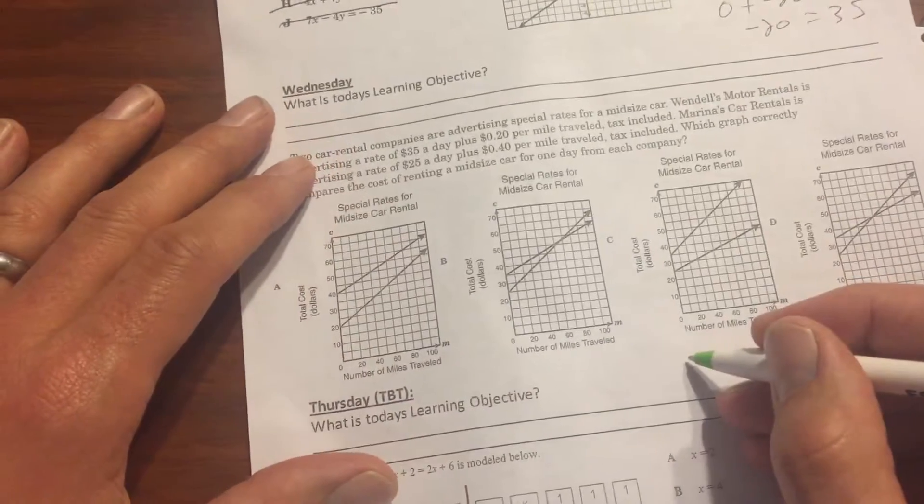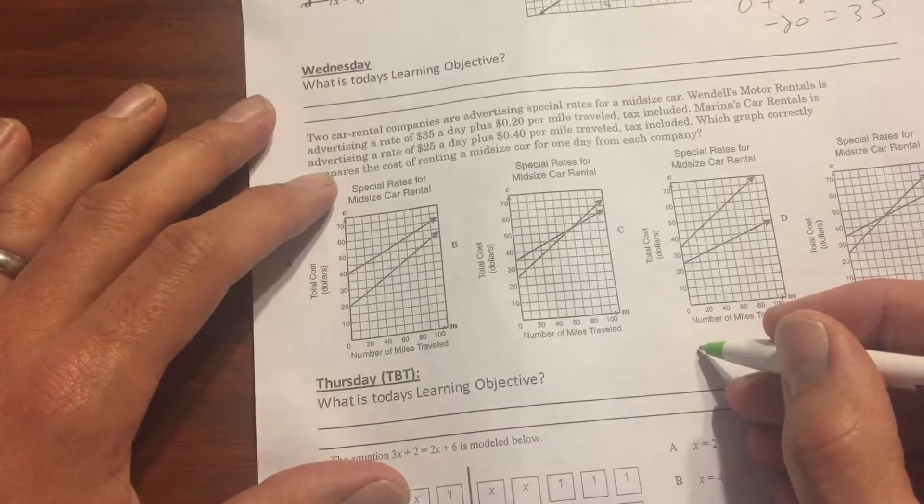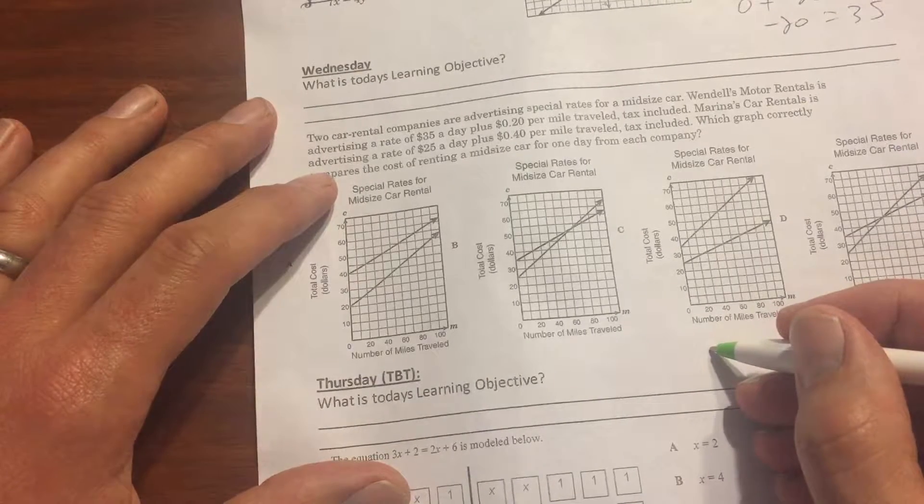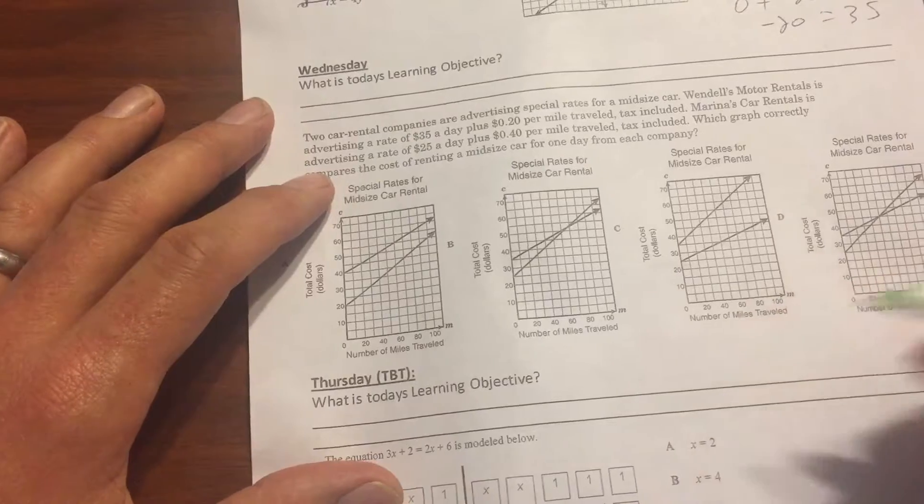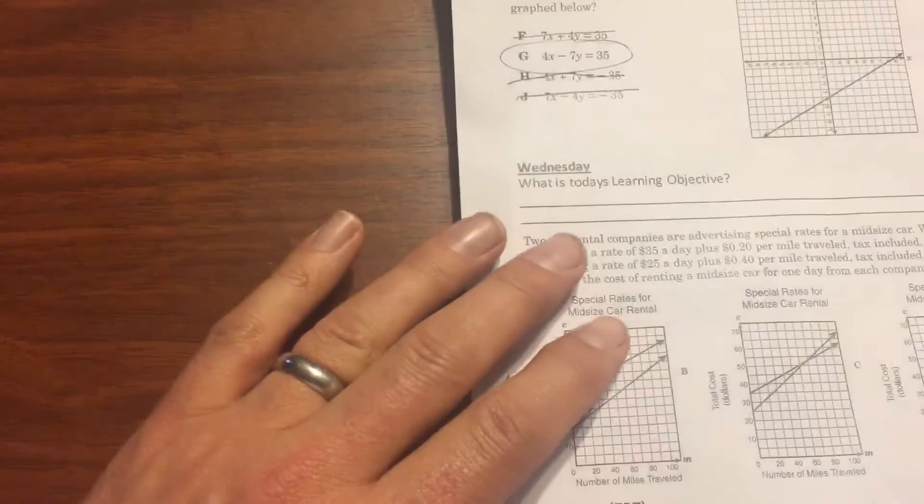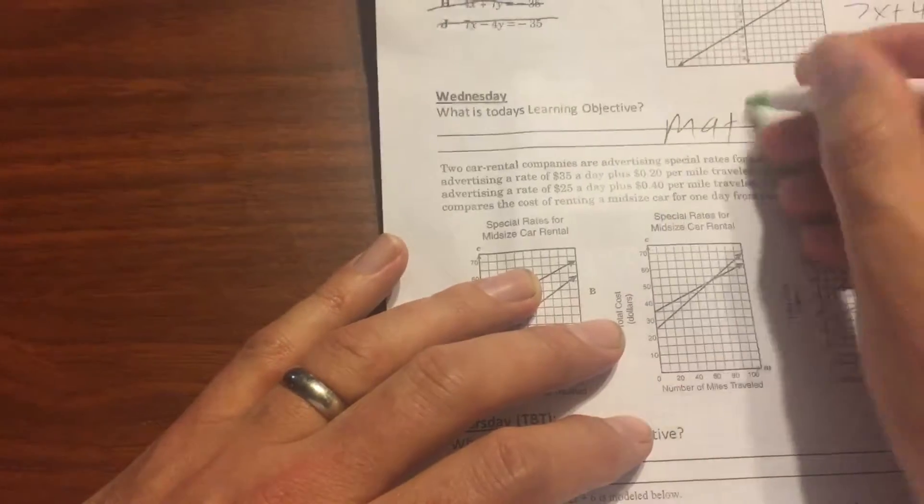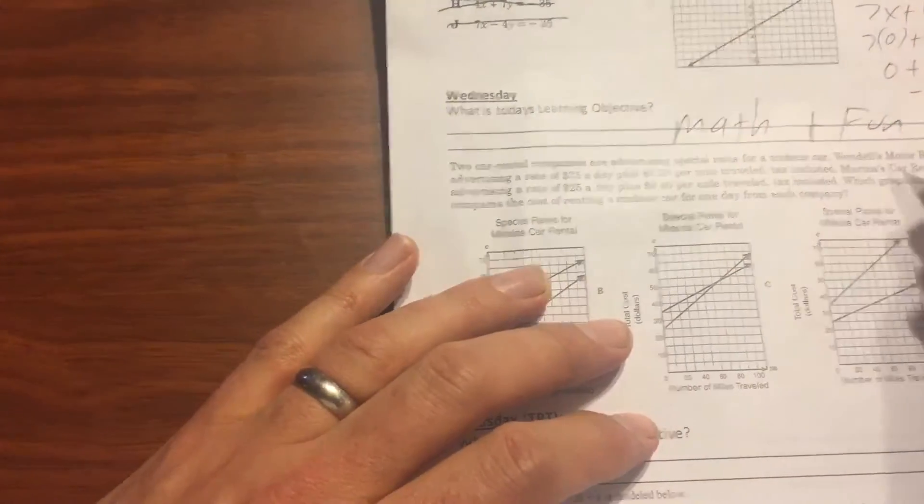So my rules in the classroom are there's two of them at this point. The first rule is if you see me do something wrong, say it. The second rule is if you see something that can be done better, go ahead and say that as well. Those are the two rules. And the objectives are always going to be the same thing, math and fun.